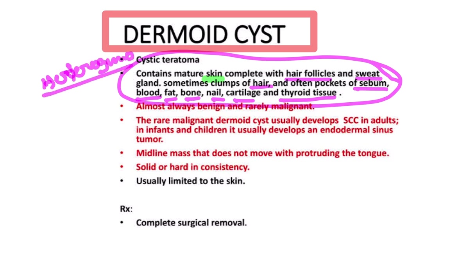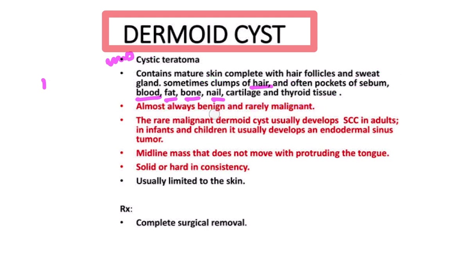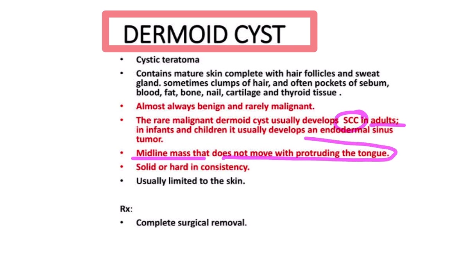On ultrasound, the heterogeneous structure reflects derivatives from ectoderm, mesoderm, and endoderm. In gross appearance also, different types of structures are present. The dermoid cyst is almost always benign and rarely malignant — malignant dermoid cysts do occur but usually in adults. As a midline mass, it does not move with protrusion of the tongue; it may also occur in other embryological fusion areas.